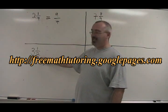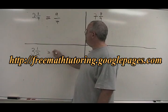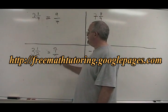3 times 2 is 6, plus 1 is 7. The denominator stays the same.